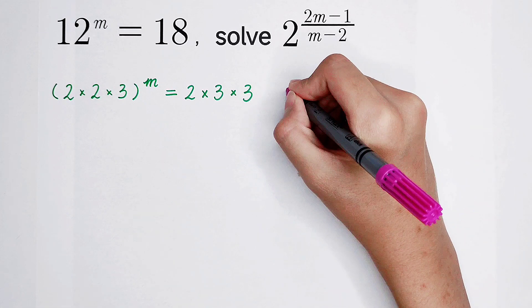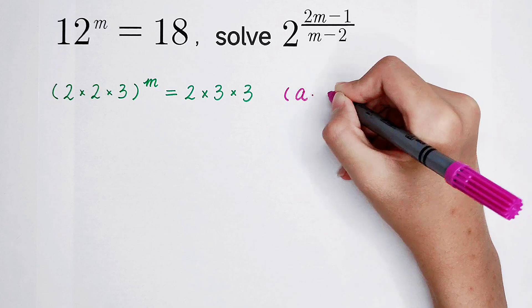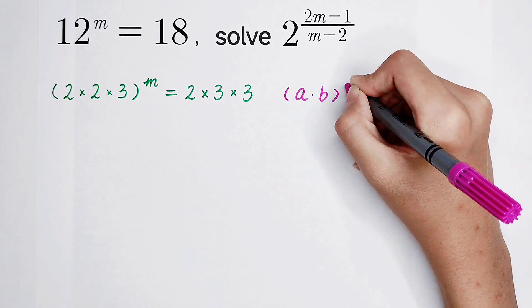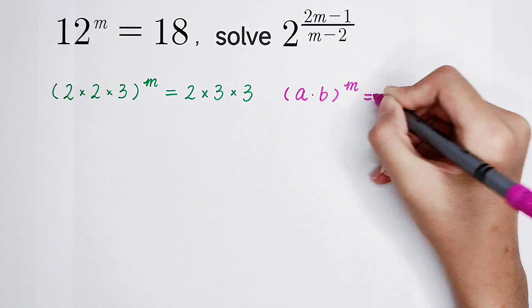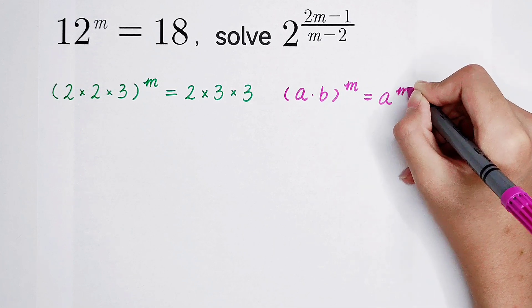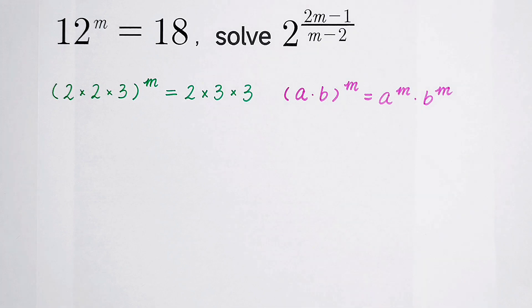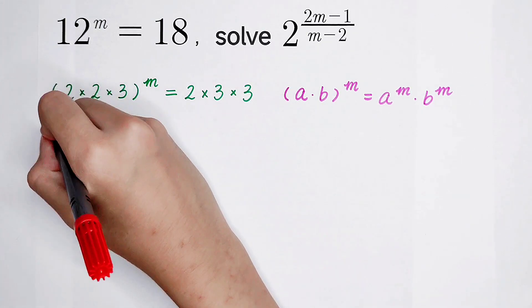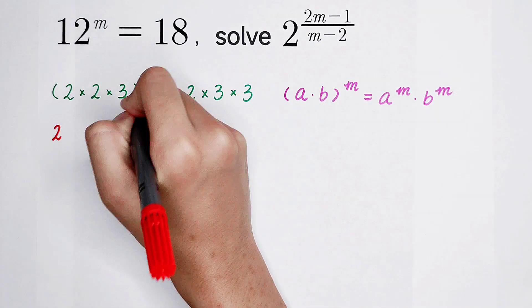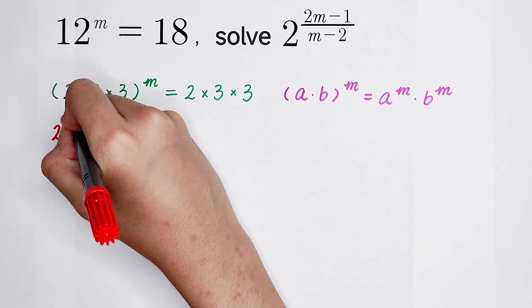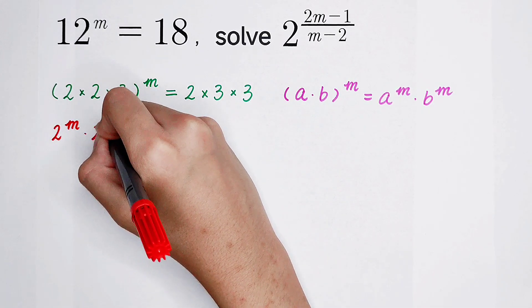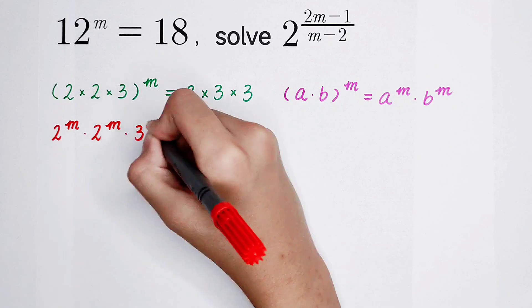So now, from the formula, a times b all to the power m is equal to a to the power m, then times b to the power m. From this, this equation is 2 to the power m times 2 to the power m, then times 3 to the power m.